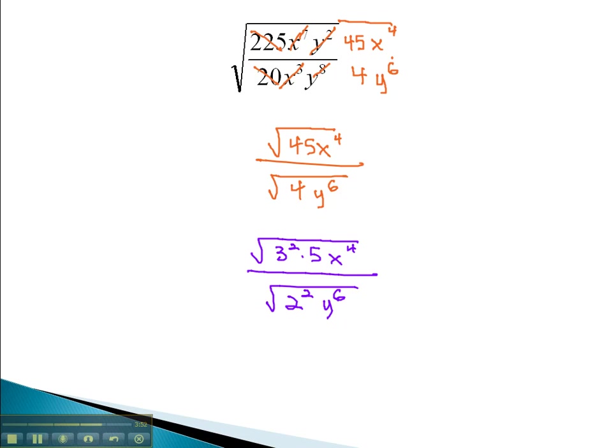We can now simplify by dividing our exponents by the index. 3 squared comes out as 3 to the 1st. We can't simplify the 5 because there's no exponent. But x to the 4th, dividing by the index of 2, gives us x squared. In the numerator, we have 3x squared, and inside the radical we're left with a 5.